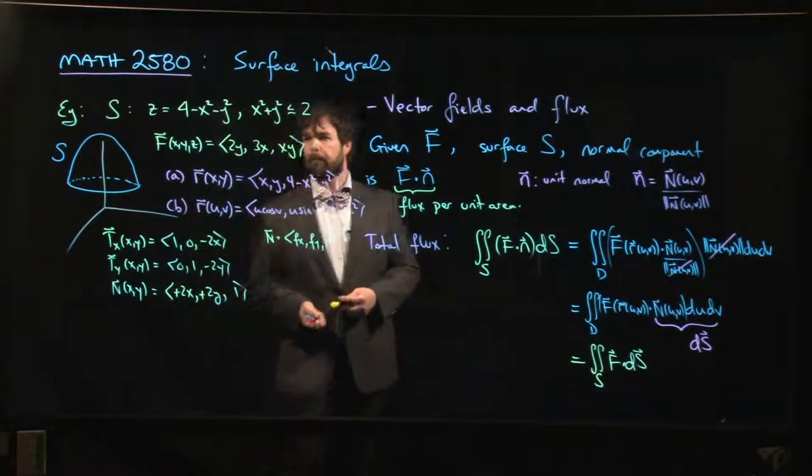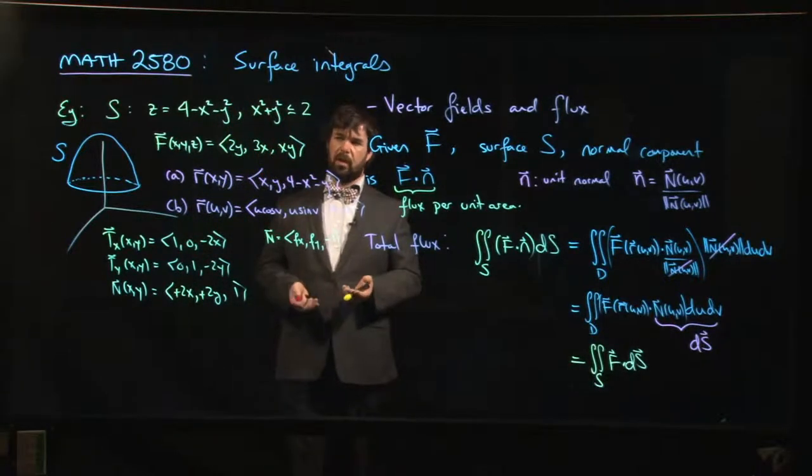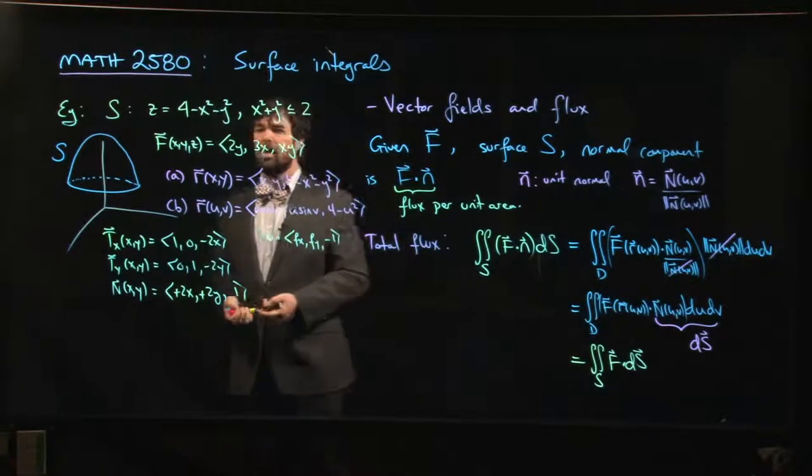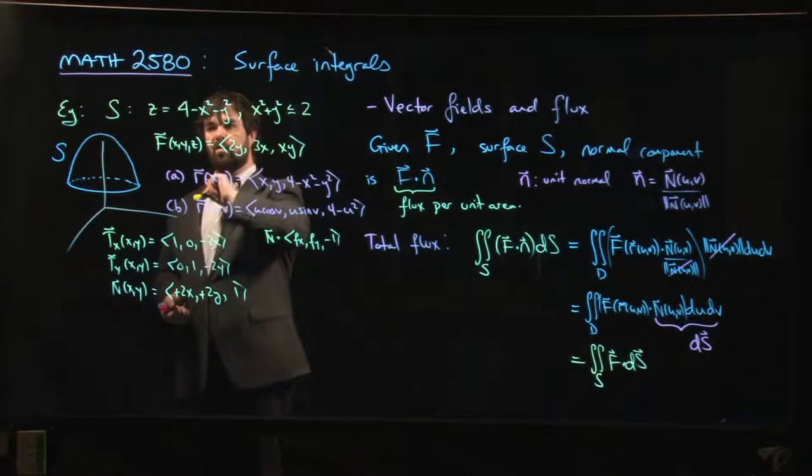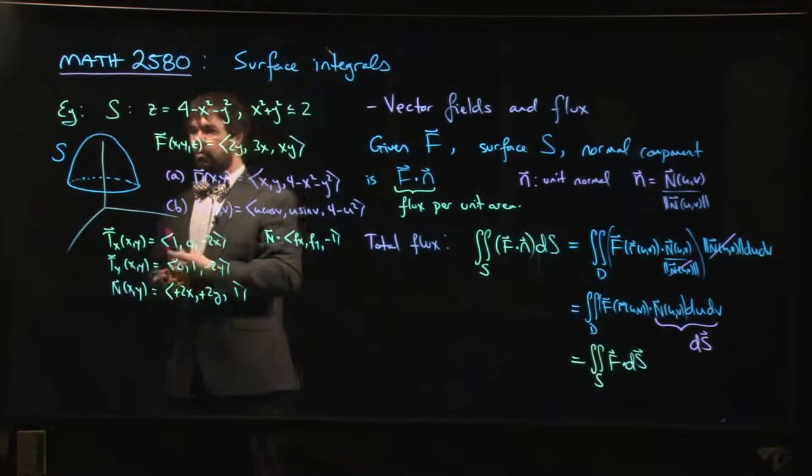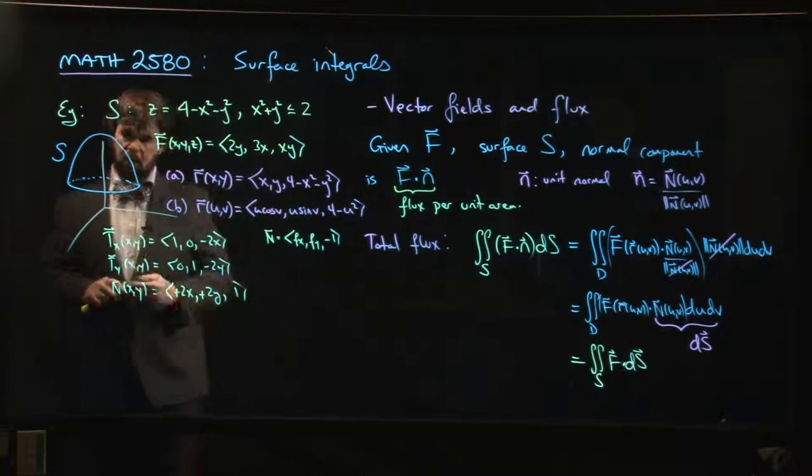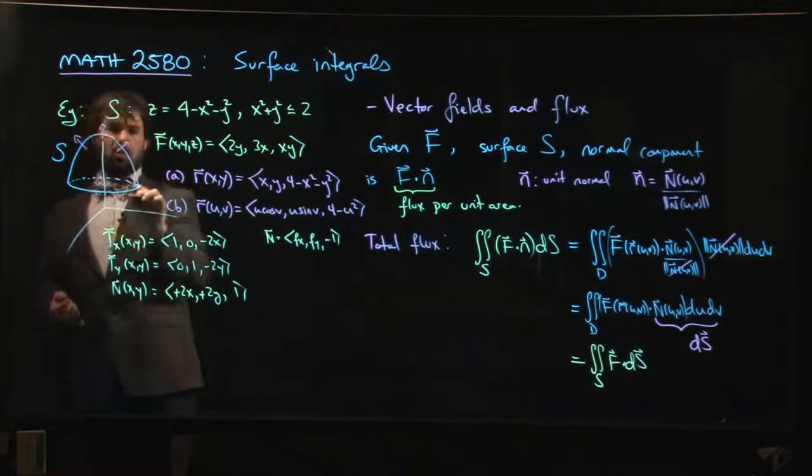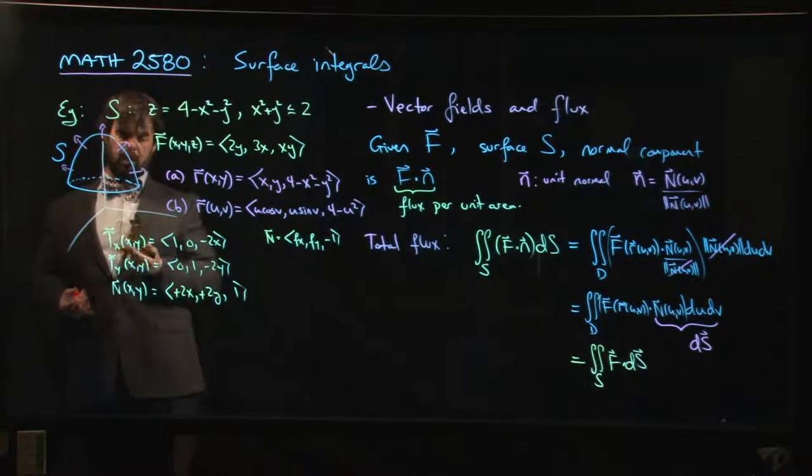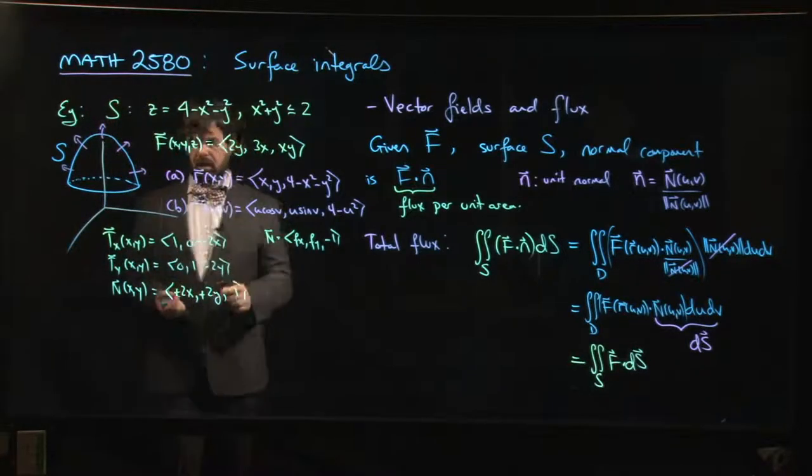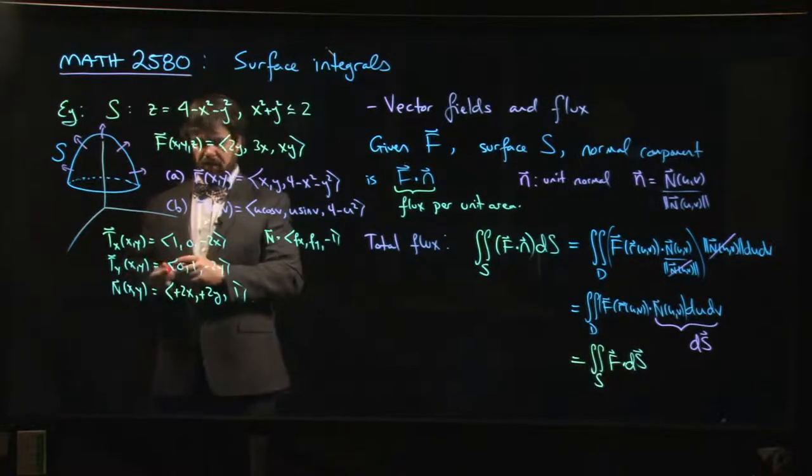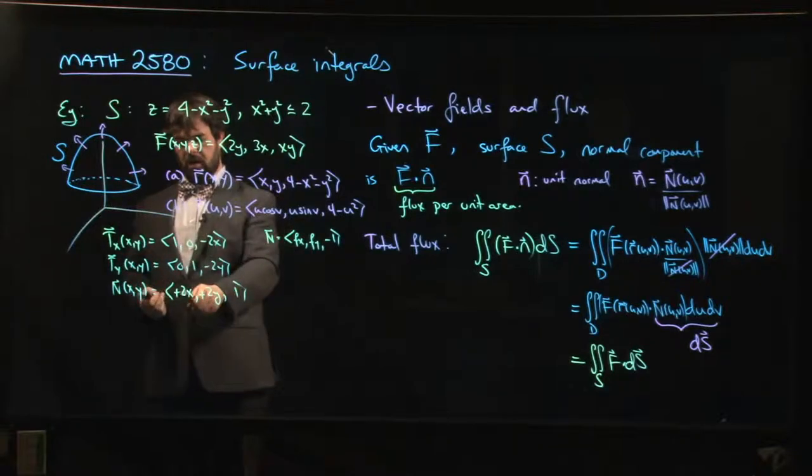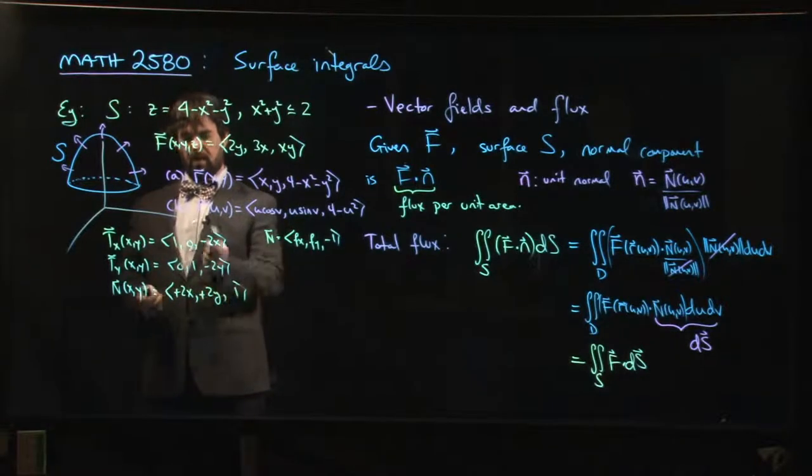Now this problem is actually not quite well posed yet. I didn't tell you which direction I want the normal vector to be facing. Before I can calculate the flux of this vector field across this surface, I need to know which way it's oriented. And I think what we'll do is we'll go with the sort of upward orientation, so that this is the right normal vector. If we wanted all the normal vectors pointing down and in, then we'd have to switch the signs so we get negatives everywhere.